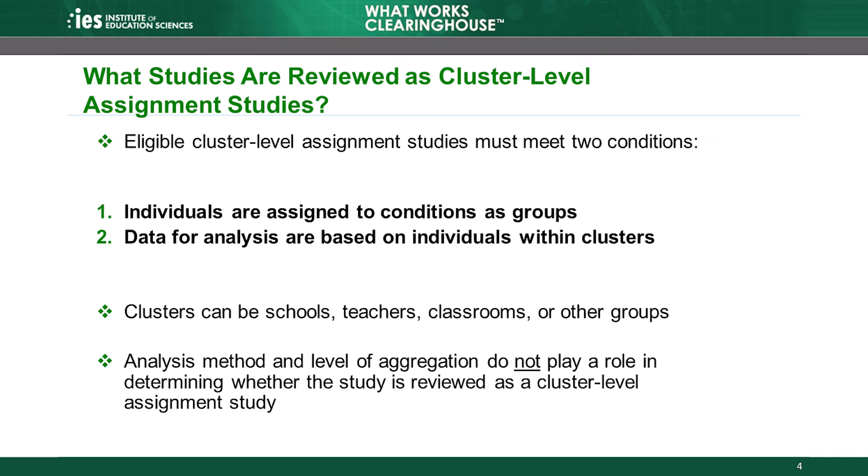Second, the data the study analyzes must be based on individuals within clusters. For example, imagine a district wants to test how a new curriculum impacts student achievement. Researchers assign schools to either an intervention group implementing the new curriculum, or a comparison group continuing the old curriculum. If the study then compares student achievement in the intervention and comparison group schools, it is considered a cluster study. The unit of analysis does not affect eligibility — a study could analyze individual student test scores or aggregate data to school-level averages. As long as clusters are assigned to conditions and the data are ultimately based on individuals within those clusters, it is a cluster study.